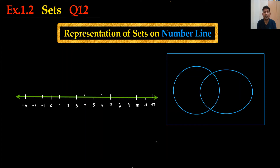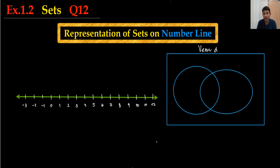Hi everyone, welcome back to my channel, Vertex Mono Jiroy. We are doing today exercise 1.2, question number 12, only from the sets. This is the representation of a set on the number line, but I have also drawn here a Venn diagram to help out — how we can use the Venn diagram and the number line to represent a set.